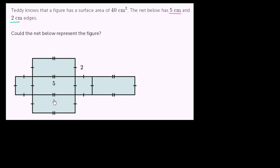Let's make sure we understand what this represents. It has 5 centimeter edges - this is one of the 5 centimeter edges right here. Any edge with this double hash mark is also going to be 5 centimeters. So this edge, this one, this one, and these two over here are also 5 centimeters.